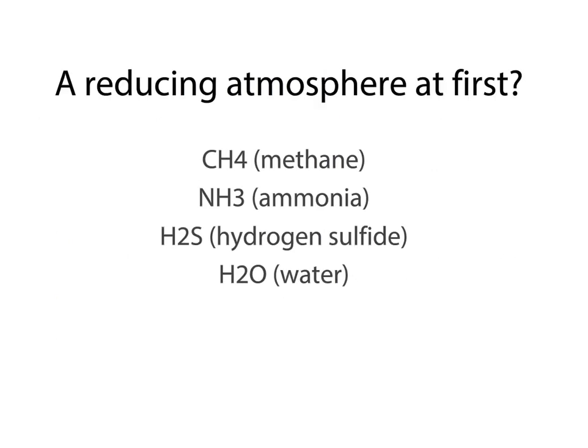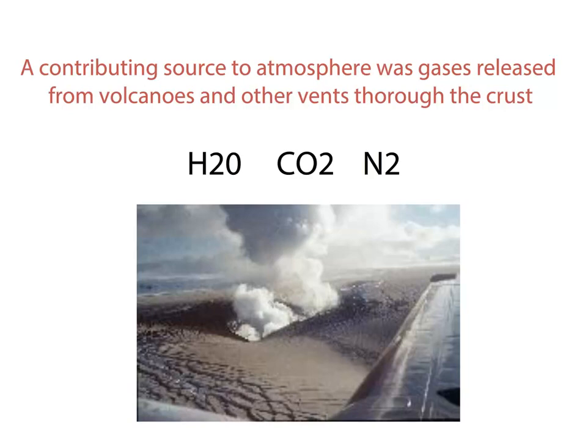The atmosphere of early Earth was what's called a reducing atmosphere. Reducing simply means elements are in their simplest form: carbon bound with hydrogen, nitrogen with hydrogen, sulfur with hydrogen, and oxygen with hydrogen. So we had methane, ammonia, hydrogen sulfide, and water in the atmosphere — but really that's about it. What contributed gases to the atmosphere were volcanoes and other gases that came from vents through the Earth's crust. In order to have an atmosphere, you've got to have volcanic activity — as scary as it is, it's necessary.